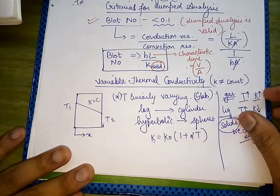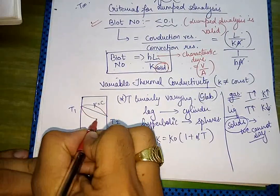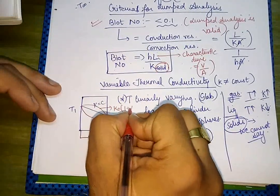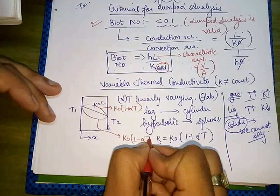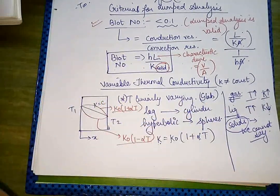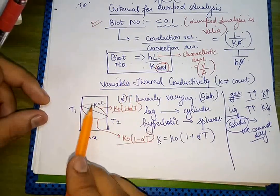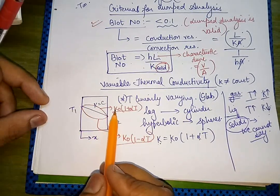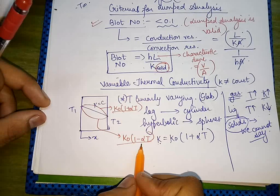There are two possibilities for temperature variation: k = k₀(1 + αT) for one profile, and k = k₀(1 − αT) for the other. Temperature was linearly varying in case of slabs, logarithmically varying in case of cylinders, and hyperbolically varying in case of spheres — when thermal conductivity is constant. When k is variable, the profile changes accordingly.